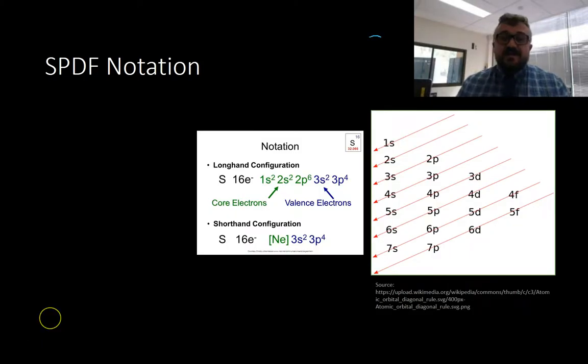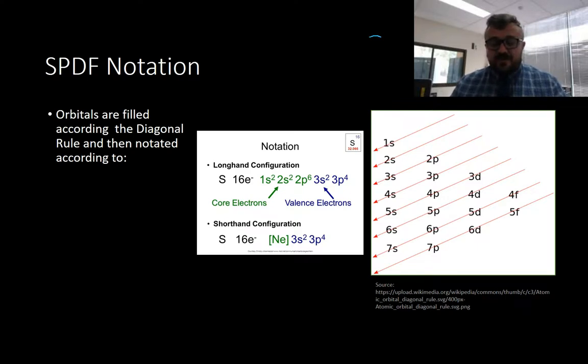How do we write this down? We write this using SPDF notation. The best way to do it is using the diagonal rule. You write 1 to 7 S down a page, then move down one to 2 to 7 P, then move down to 3 to 6 D, and 4F to 5F. You need to be careful. These help us work out where the electrons are going to be according to the orbital number and the orbital name. It doesn't fill up in the order of 1, 2, 3, 4 or just S, P, D, F.